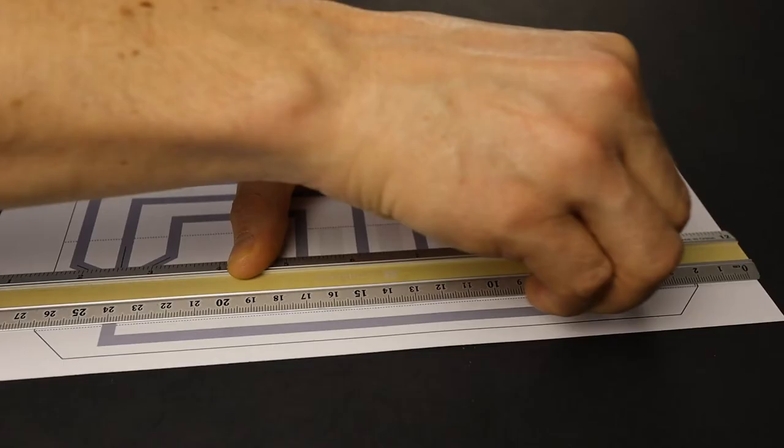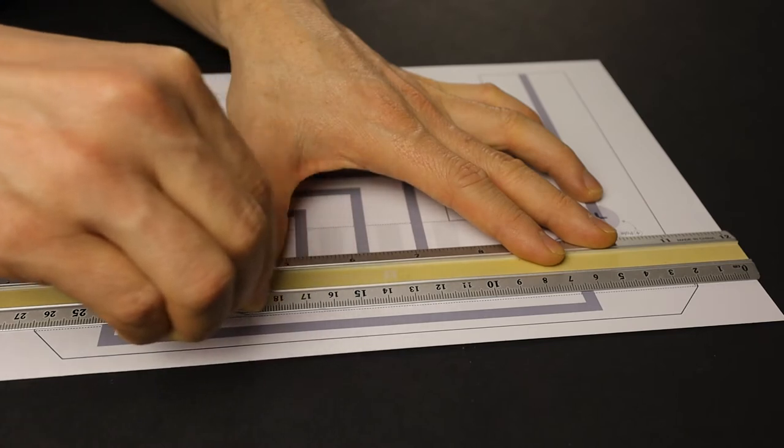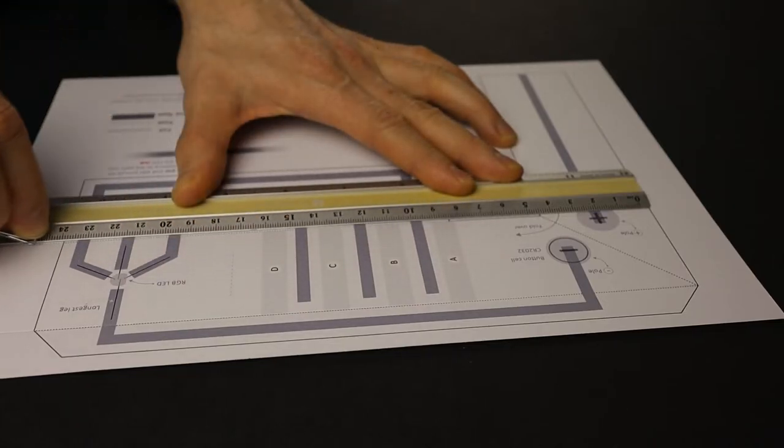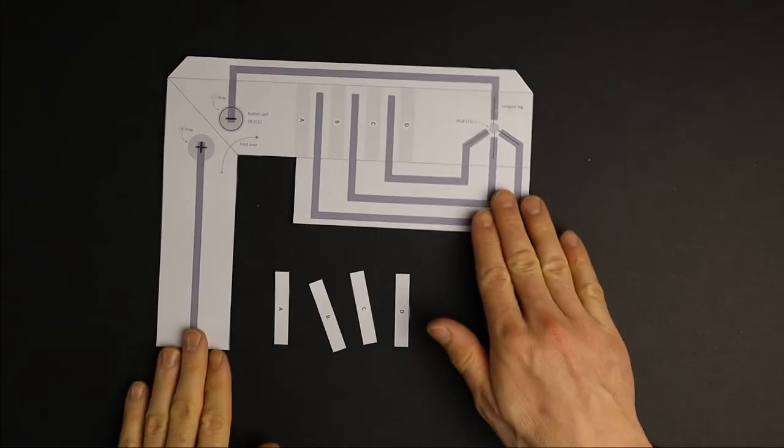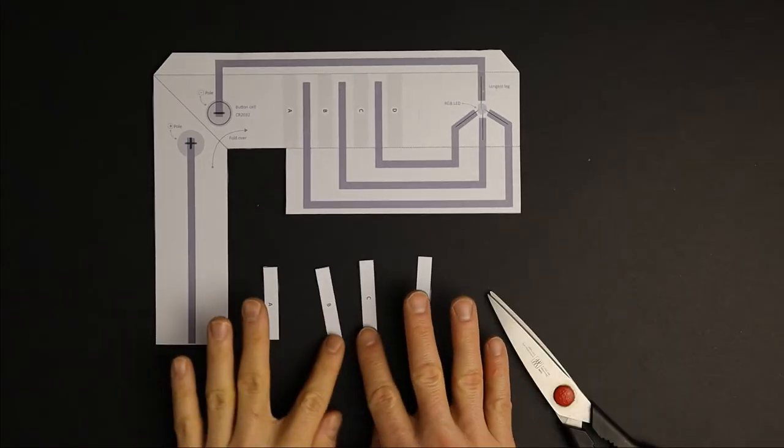Once you have printed the template, start by scoring the three edges marked by dotted lines with the round edge of a paper clip or any other pointy object. Now cut out the template. Don't forget the four short paper strips.